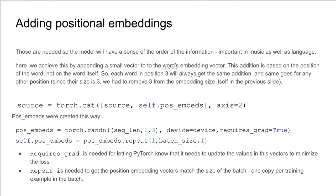Adding positional embeddings. These are needed so the model will have a sense of the order of the information, which is important both in music as well as in language. Here, we achieve this by appending a small vector to the word's embedding vector. This addition is based on the position of the word, not the word itself. So, each word in position 3 will always get the same addition, and same goes for any other position.